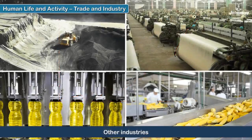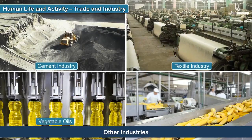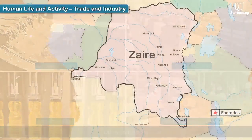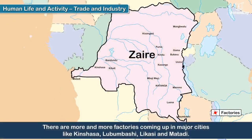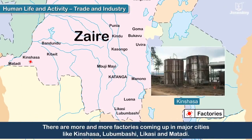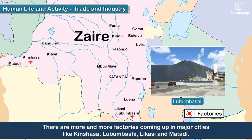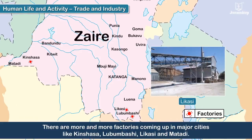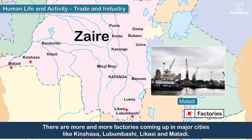Other industries include cement, textiles, vegetable oils and food processing. There are more and more factories coming up in major cities like Kinshasa, Lubumbashi, Likazi and Matadi.